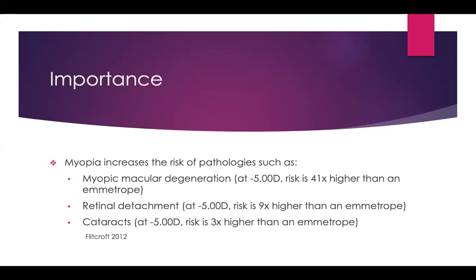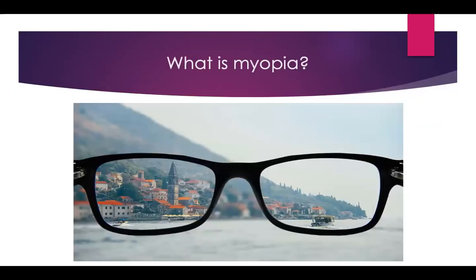Myopia increases the risk of pathologies, which is why we're so interested in stopping the progression. Myopic macular degeneration: if you have a patient at about minus five, the risk is about 41 times higher than an emmetrope. Retinal detachment is another pathology that can develop — at minus five the risk is about nine times higher than an emmetrope, and cataracts are about three times higher.